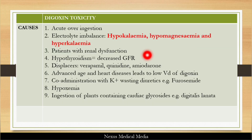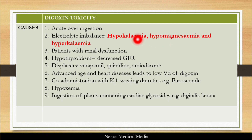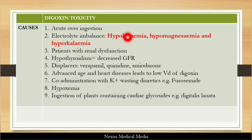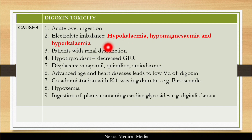Digoxin toxicity can occur if there is over-ingestion of digoxin or if there are electrolyte imbalances like hypokalemia, hypomagnesemia, and hypercalcemia. Hyperkalemia can actually be protective, because digoxin competes with potassium — if you have a high concentration of potassium, you may be protected against the effects of digoxin toxicity.